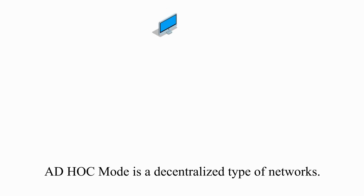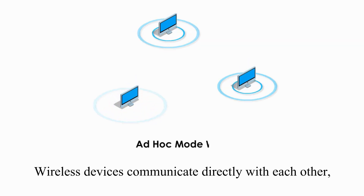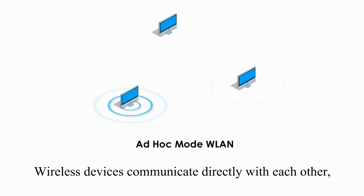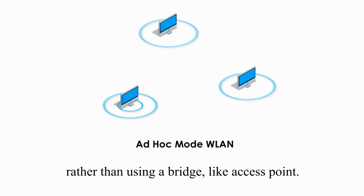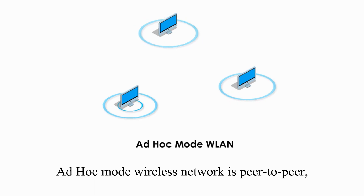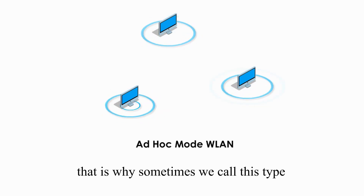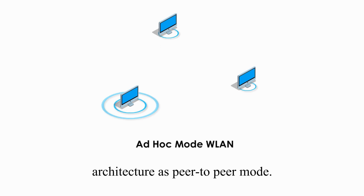Ad-hoc mode is a decentralized type of network. Wireless devices communicate directly with each other rather than using a bridge like an access point. Ad-hoc mode wireless network is peer-to-peer, that's why sometimes we call this type of architecture peer-to-peer mode.